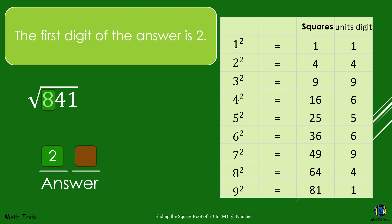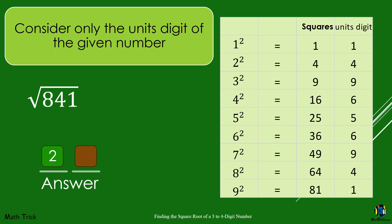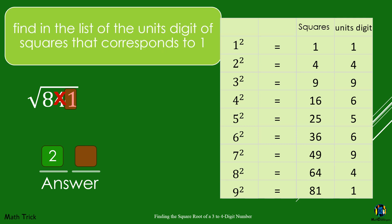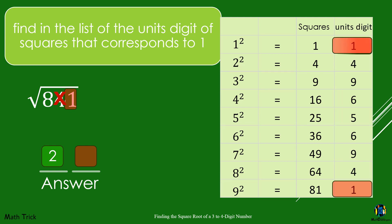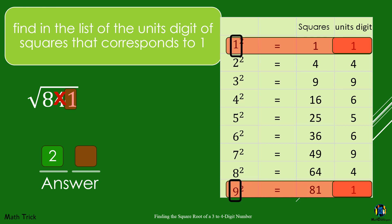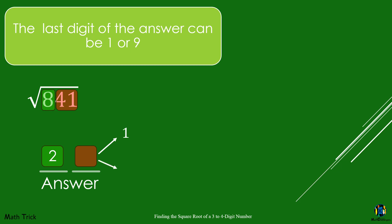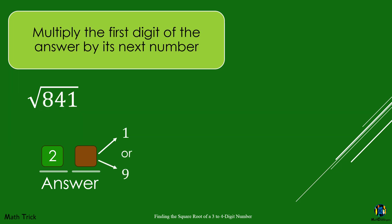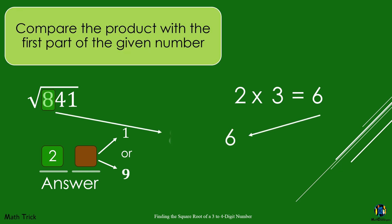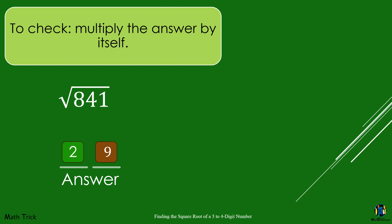We have now the first part of the answer. For the last two-digit number on the right of the given number, just consider the 1's digit and ignore the 10's digit. If the 1's digit of the square is 1, then the square root would either end with 1 or 9. Multiply the first digit of the answer by its next number: 2 times 3 equals 6. Compare the product with the first part of the given number. 8 is greater than 6, therefore choose the bigger number. The square root of 841 is 29.